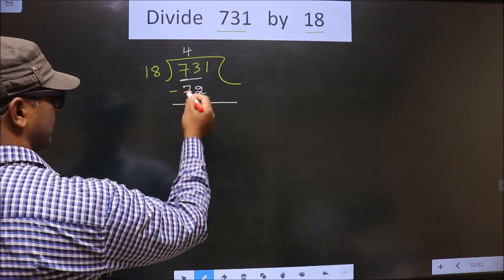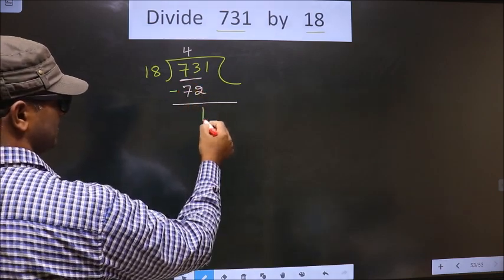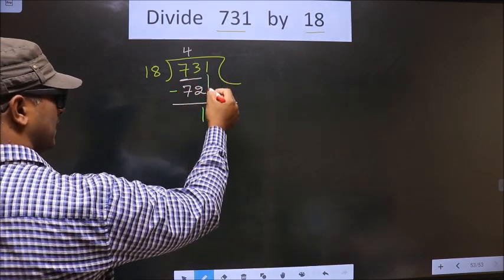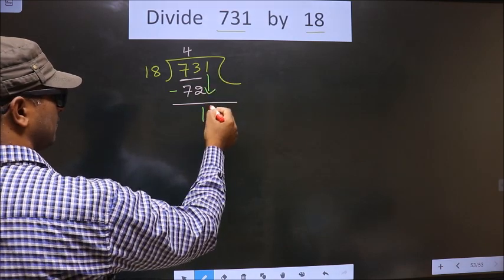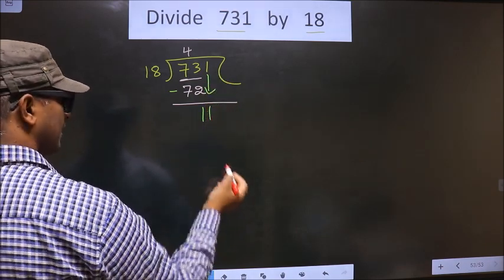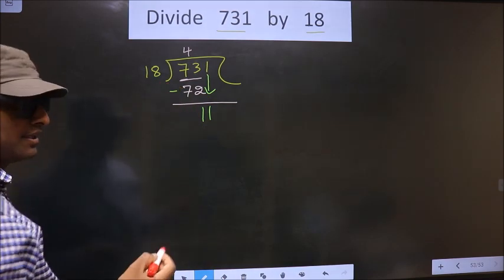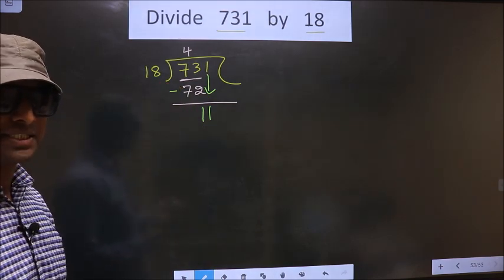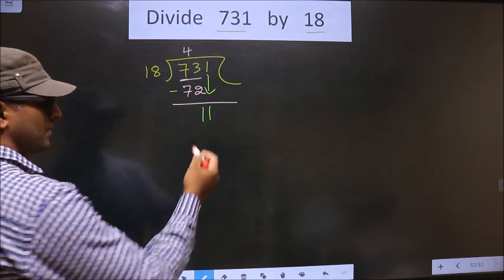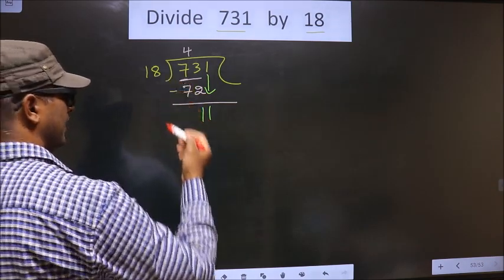Now you subtract: 73 minus 72 is 1. Now you bring the beside number down, making it 11. Here 11 is smaller than 18. This is where the mistake happens.